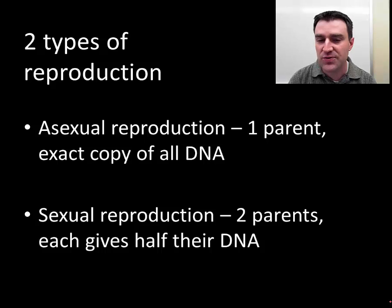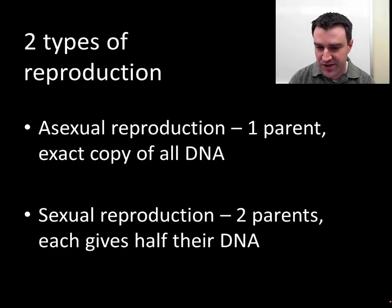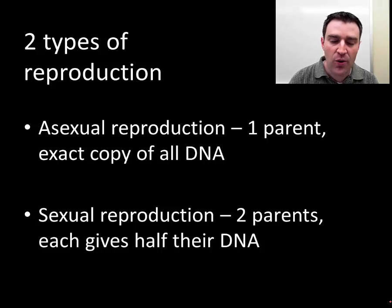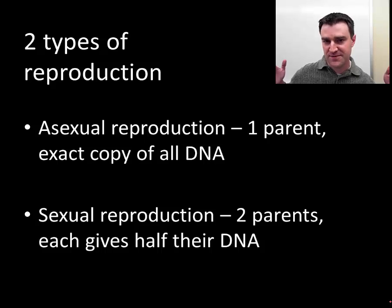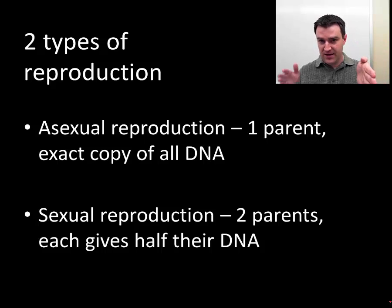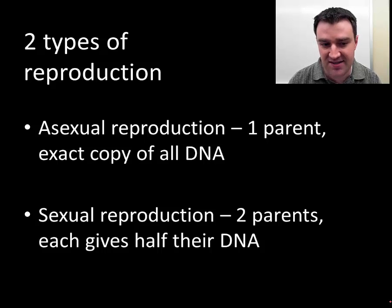There are two basic ways to reproduce offspring in biology: asexually, which involves one parent passing all of their DNA onto the offspring cell; or sexually, which involves two parents. If we want the offspring to have their full set of DNA, it makes sense for the parents to pass on halves — one half from dad, one half from mom combining together, and you have the full set again.